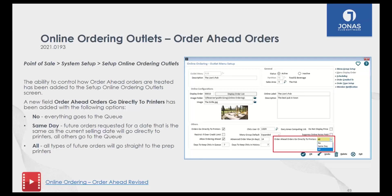If you set the setting to No, any order from your website automatically goes to your queue — a waiting list where staff decide what happens with the order (send to kitchen, hold, etc.). Set it to Same Day, and orders for the same day go directly to your kitchen printers; orders for future days go into the queue. Or set it to All, and every order from the website goes directly to your kitchen printers.